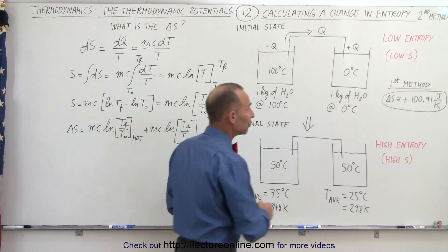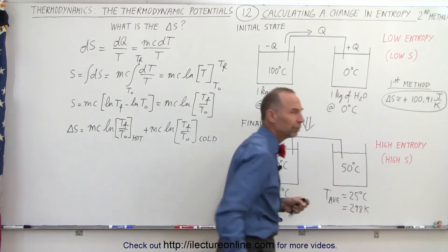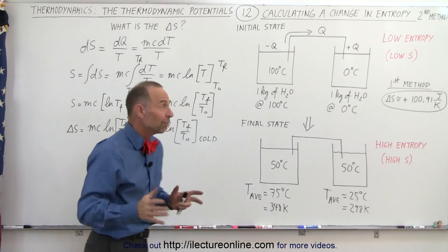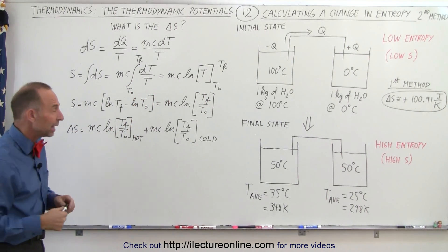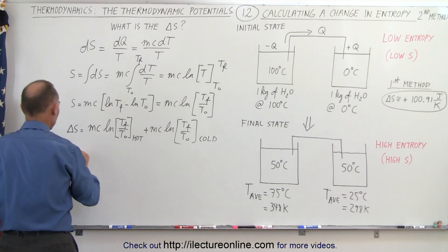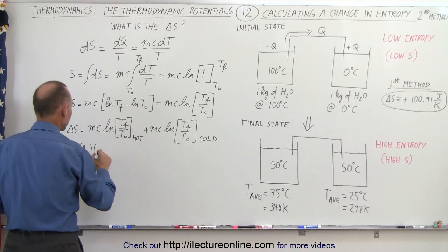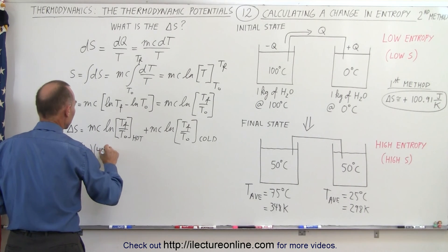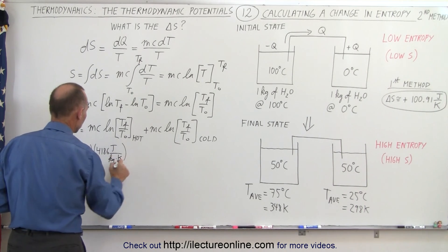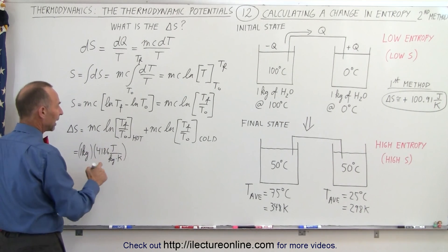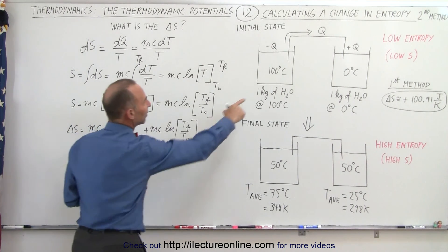In the previous video we calculated the change in entropy to be 100.91 joules per kelvin. Let's see how much of a difference it makes to use the average values for temperature versus the exact values with integration. This equals 1 kg times c, which is 4186 joules per kilogram per kelvin — notice that we get joules per kelvin — and then we multiply by the natural log of T_final over T_initial for the hot reservoir.